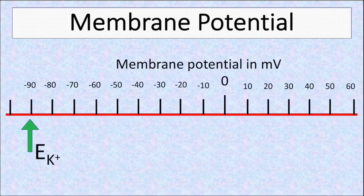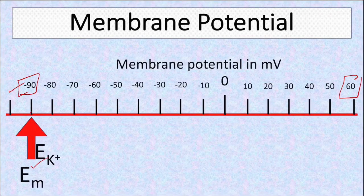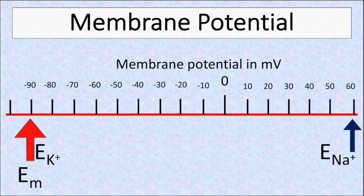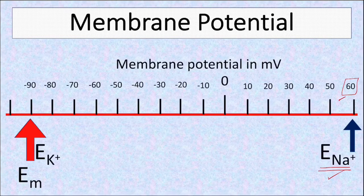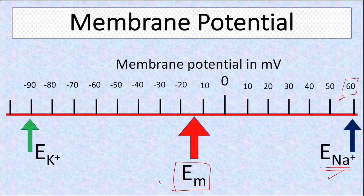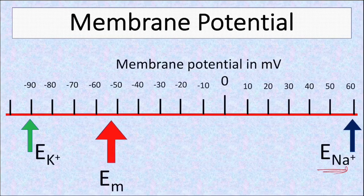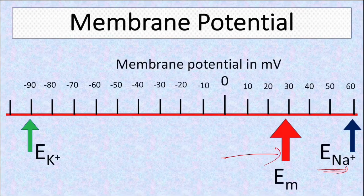Let's see this on a linear scale. This scale shows membrane potential from minus 90 to plus 60. If potassium is the only permeant ion, the membrane potential will be at minus 90. But the cell also has sodium, whose equilibrium potential is plus 60. If the membrane is equally permeable to both ions, the membrane potential will come in between — the average of these two is minus 15 millivolts. If potassium has higher permeability, the membrane potential moves towards potassium; if sodium has higher permeability, it moves towards sodium.